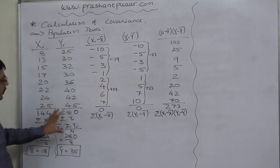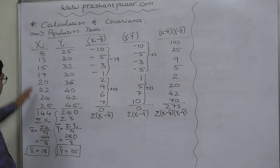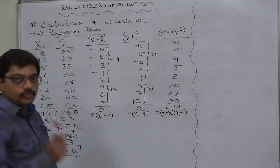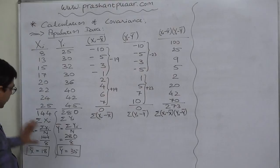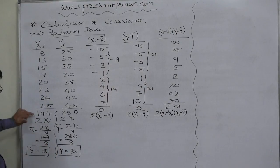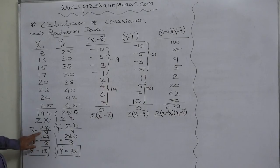We have a population data of two variables x and y. x takes these different values and y takes these different values. As we know, first we have to calculate the population means, that means x bar and y bar. We get the total of variable x as 144 divided by the population size 8 and ultimately we get the x bar or mean of x 18.